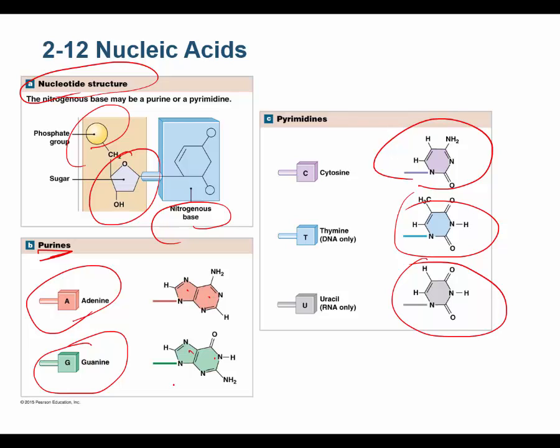Adenine and guanine are found in both of the main nucleic acids — RNA, ribonucleic acid, and DNA, deoxyribonucleic acid.